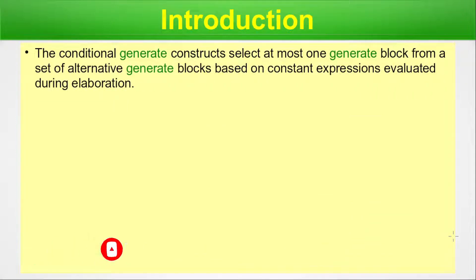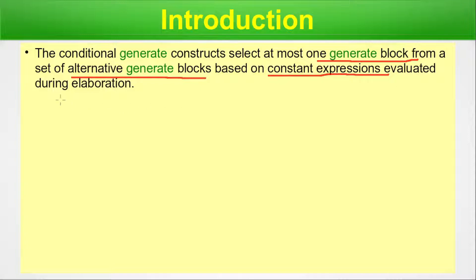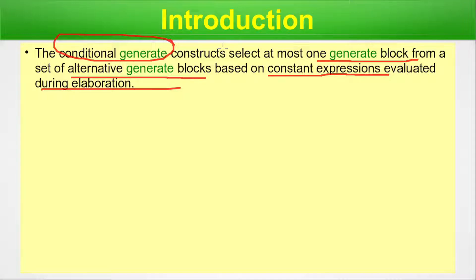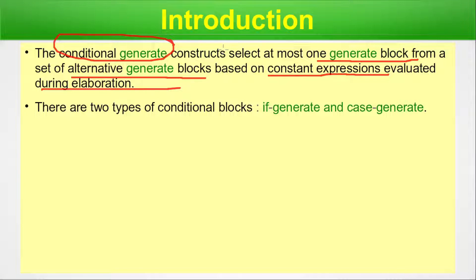The conditional generate construct selects at most one generate block from a set of alternative generate blocks, based on constant expressions evaluated during elaboration. There are two types of conditional blocks: if-generate (if-else) and case-generate.